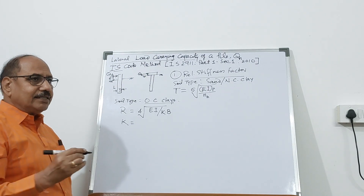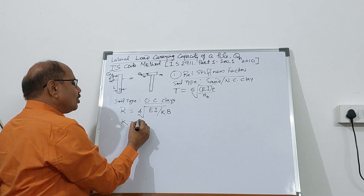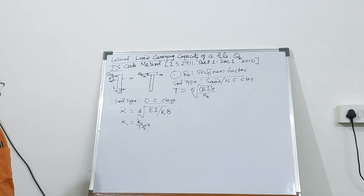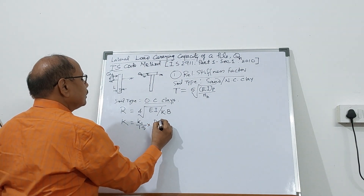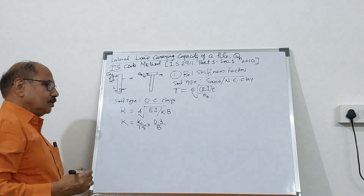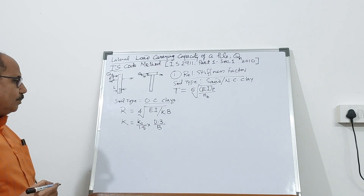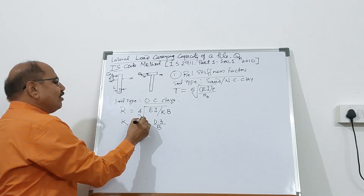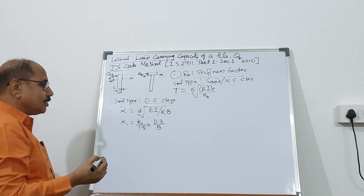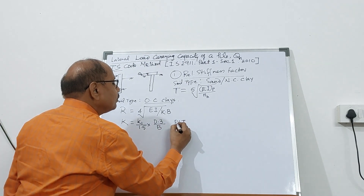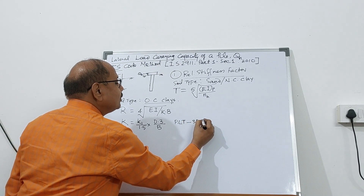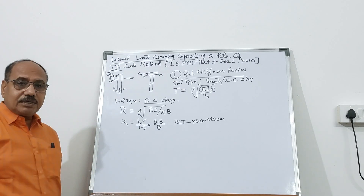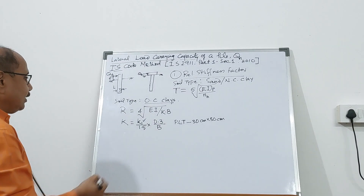K can be found out from the plate load test. From a plate load test on a 30 cm by 30 cm plate size, find out the modulus of subgrade reaction K₁, divided by 1.5, and then multiply it by 0.3 m divided by B. So the value of K can be found out using this expression. K₁ will be in kN/m³ from the plate load test.